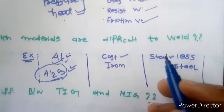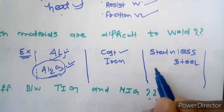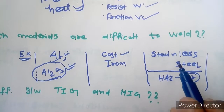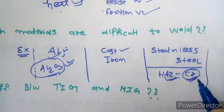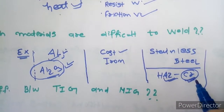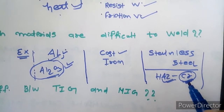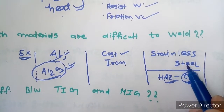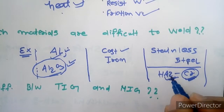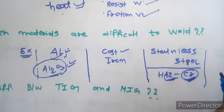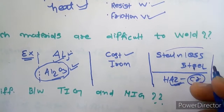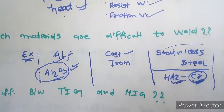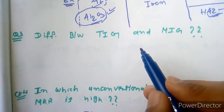In stainless steel, chromium is present in the heat affected zone. When you weld this material, chromium in the heat affected zone will start melting because chromium has a very low melting point, which creates a problem. For stainless steel we require a very high concentration heat source, so we use plasma gas welding, where the heat affected zone chromium does not melt.